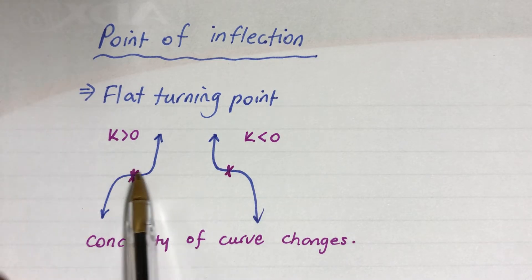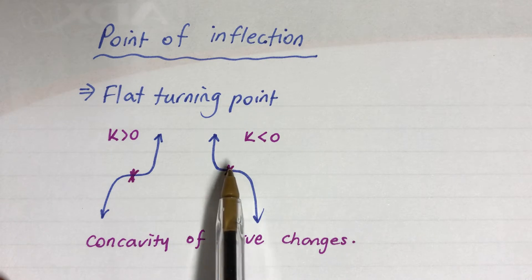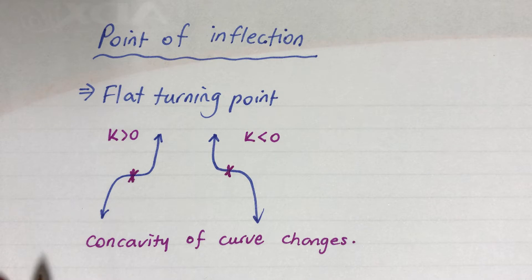This flat part is the turning point, which is the point of inflection. This is also when the concavity of the curve changes. Concavity refers to the shape of the curve.